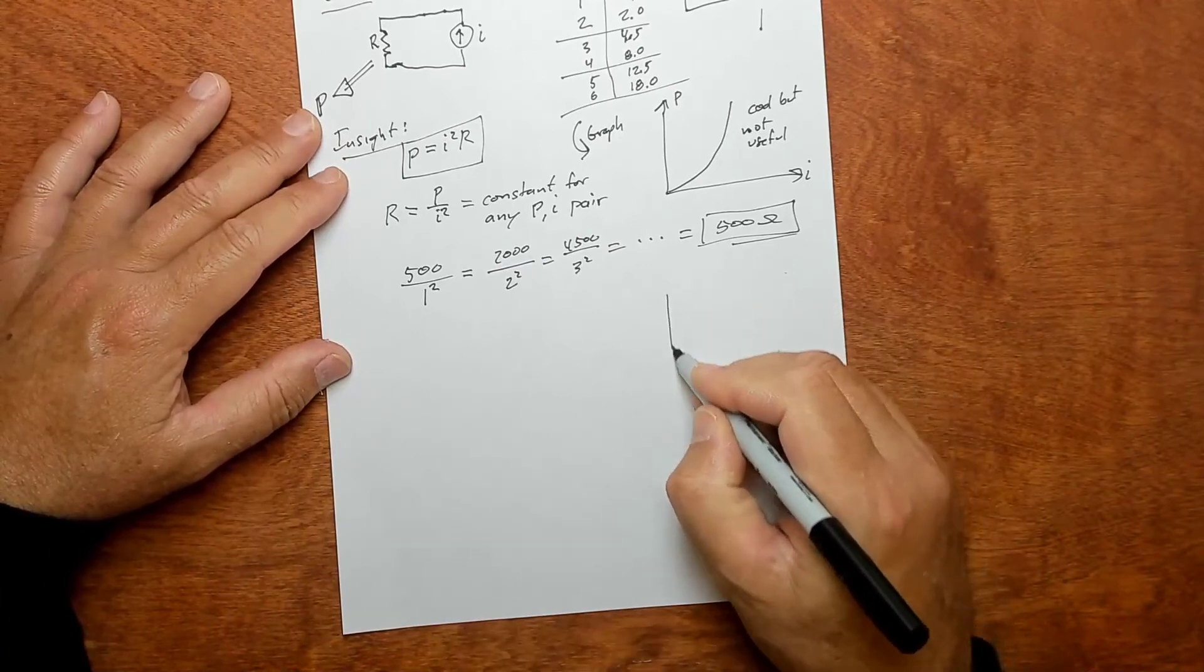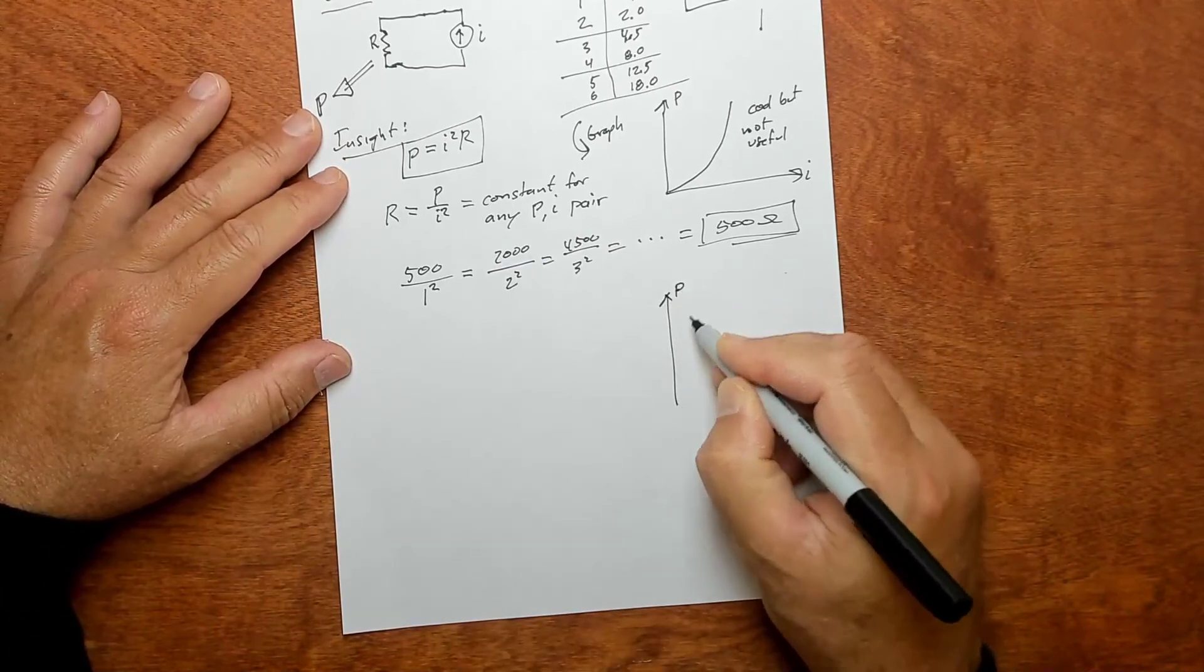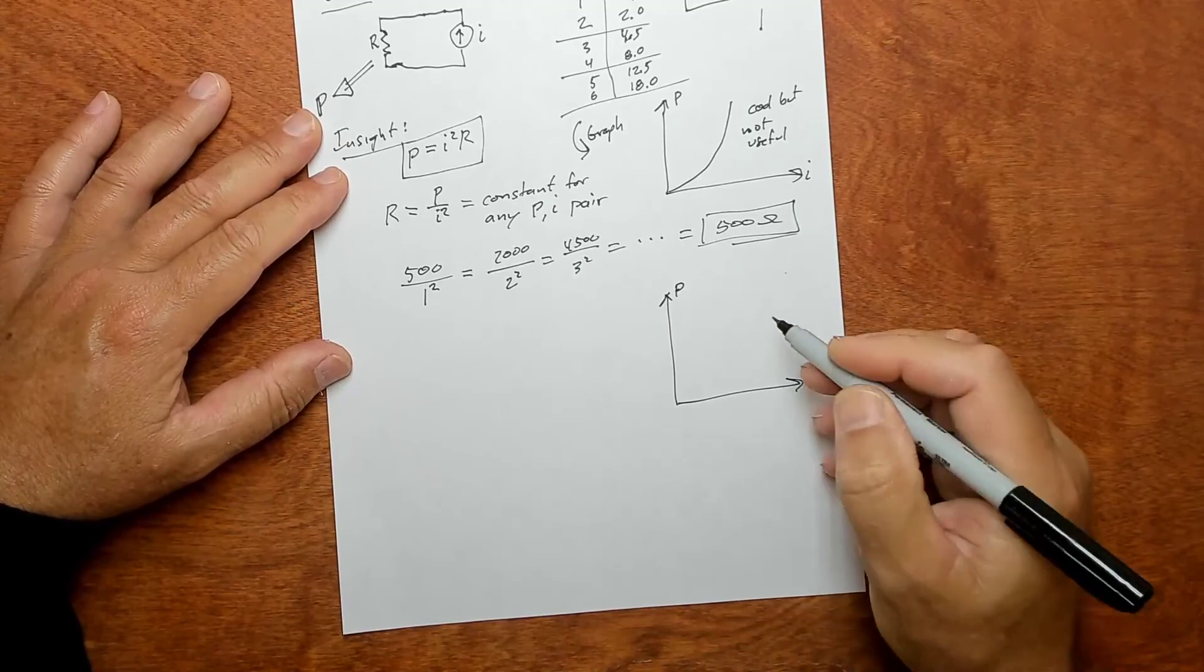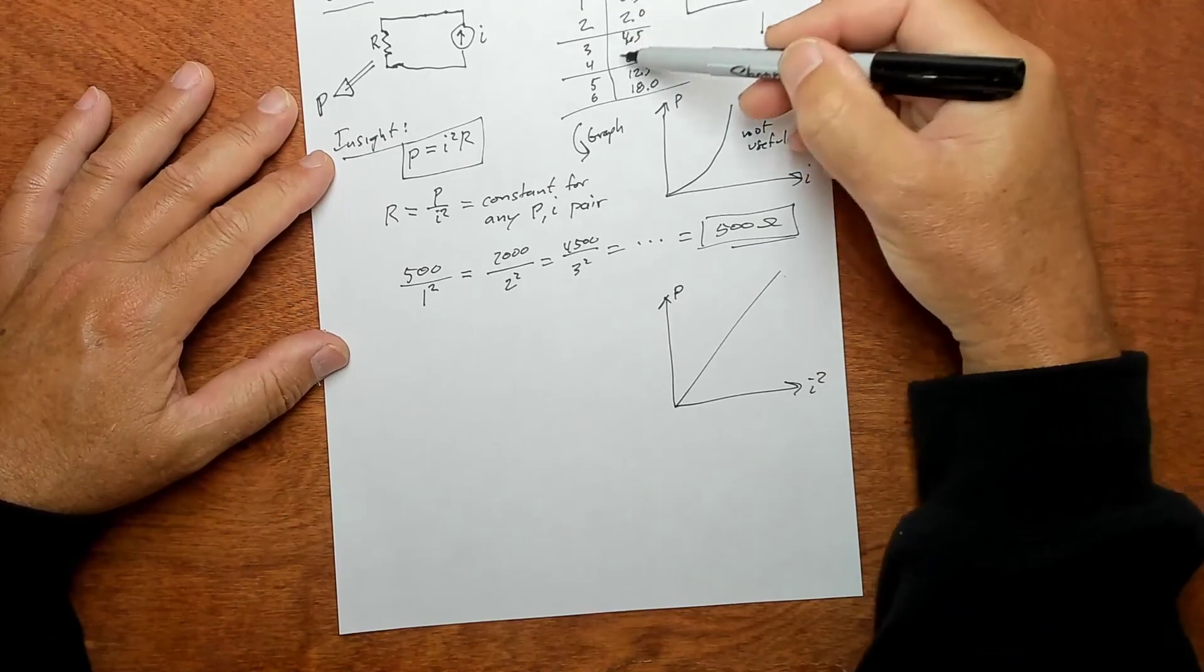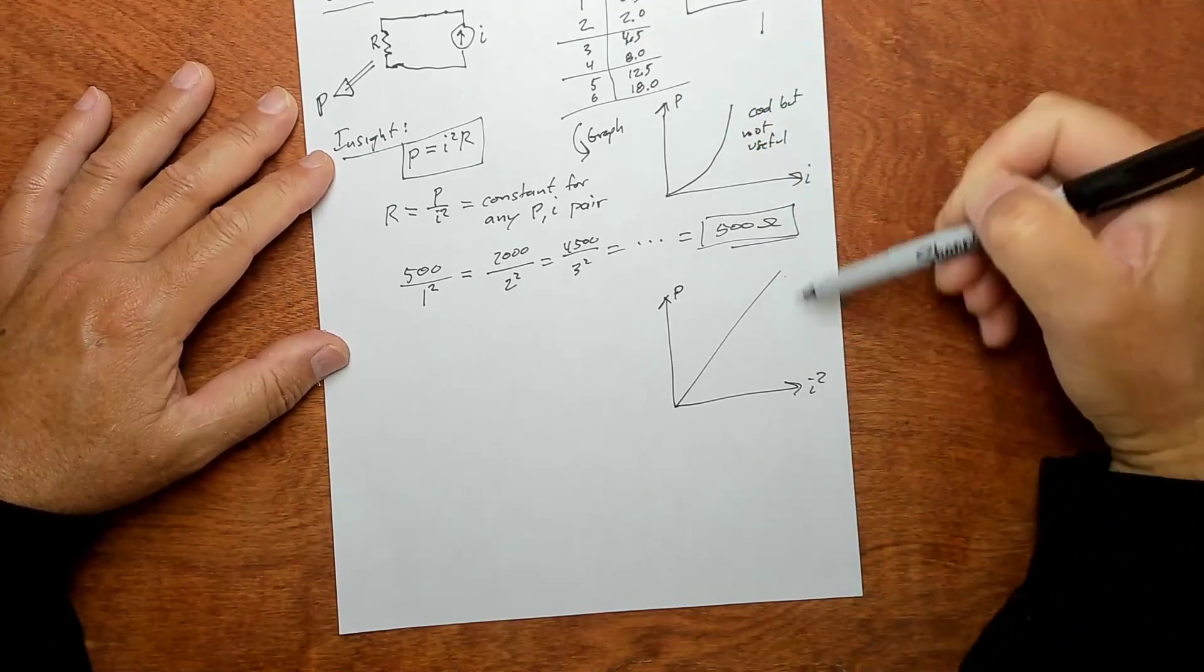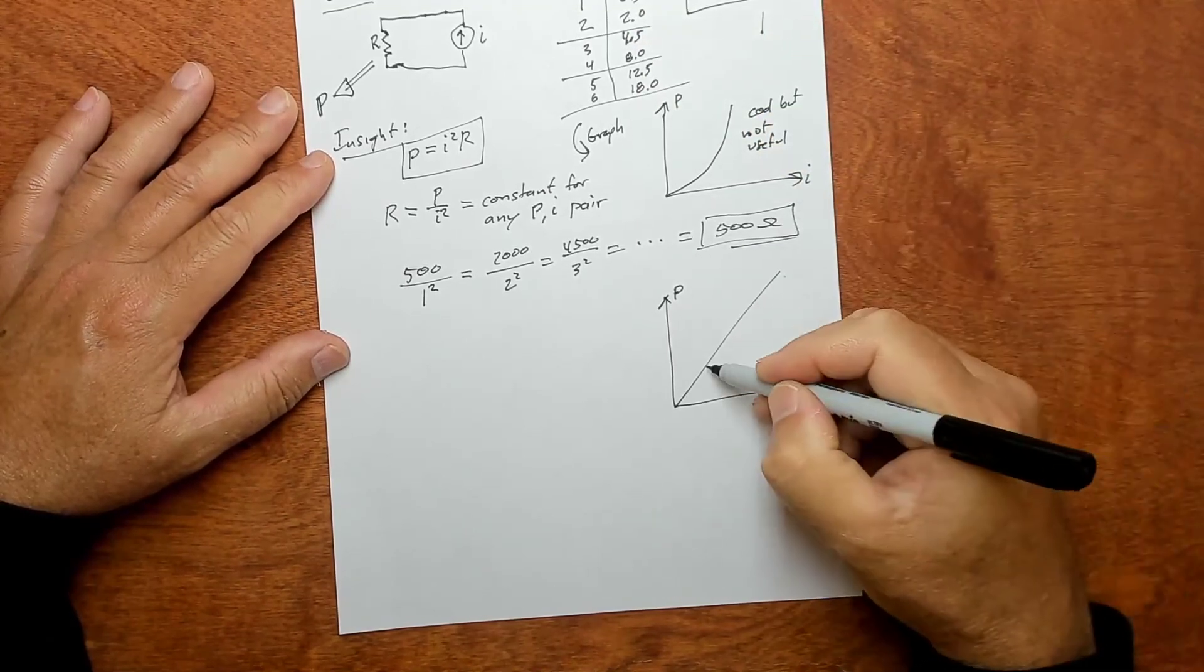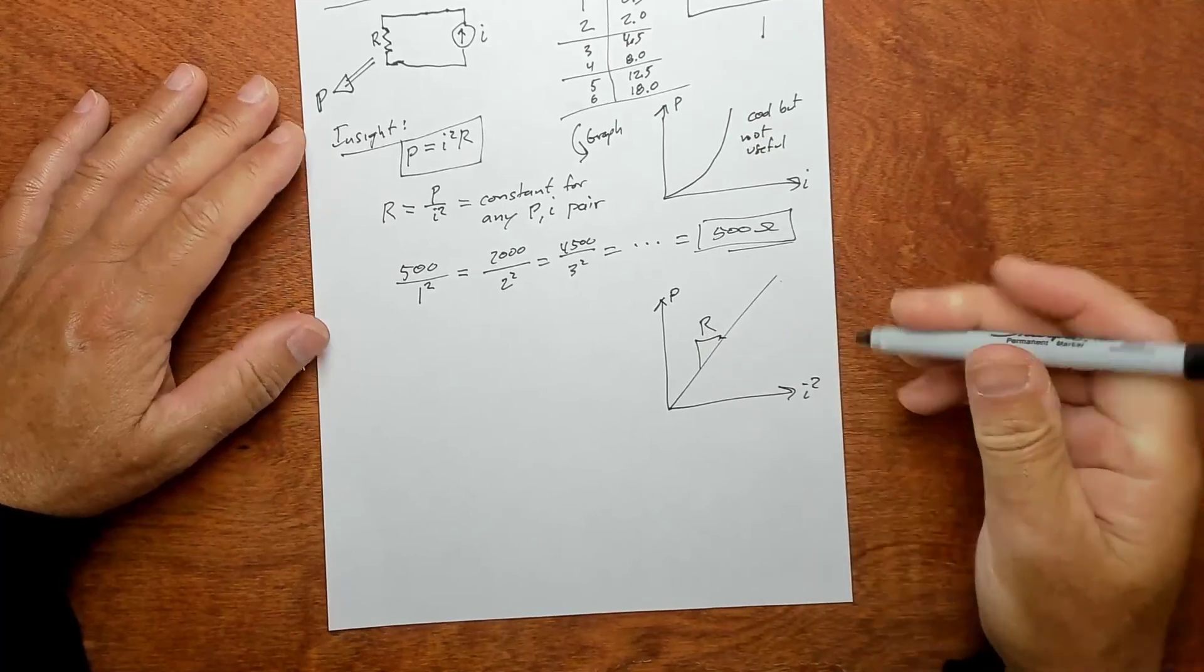The only other thing we can do is actually graph this: we could graph P versus I squared. If you graph these versus I squared, not I but I squared, you'll get a straight line which has a slope of R.